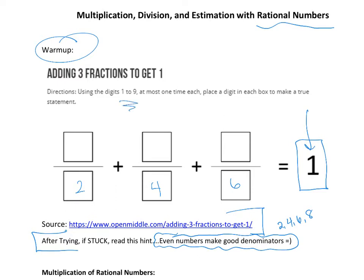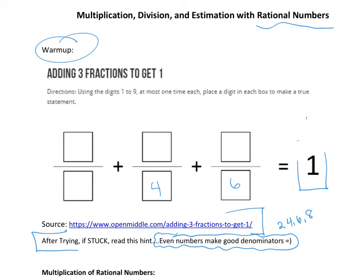You can only use digits one to nine, each at most once. If I put a one in a numerator, I can't use one again. One-half seems too big since I still need to add two more fractions to make one. Any numerator bigger than one — like three or five — creates improper fractions that are already too large. So one-half as the first fraction is just too big, and we need to rethink.